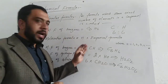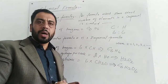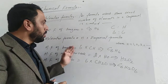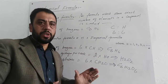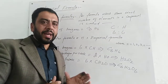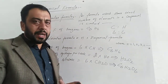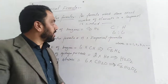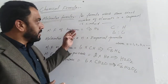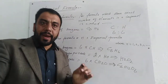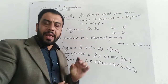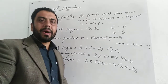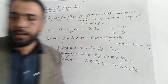Empirical formula ہمیں show the simple ratio between elements in a compound بتاتا ہے، اور molecular formula the formula which shows exact number of atoms of elements present in a compound.